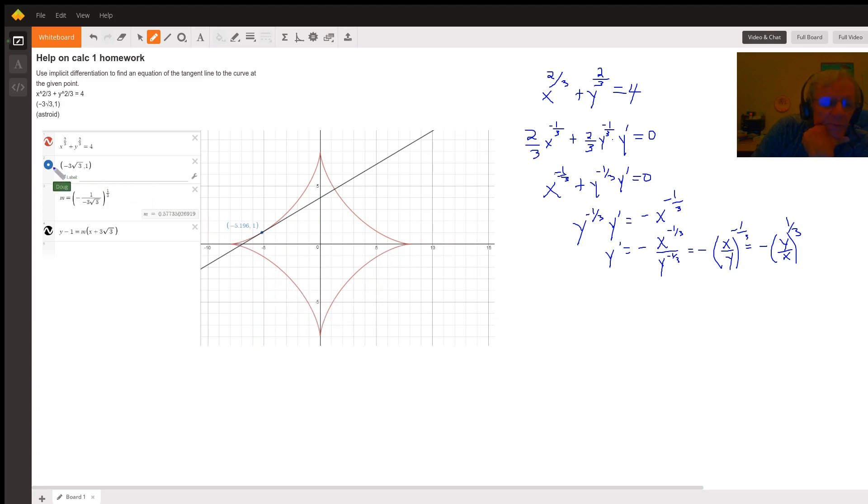I've plotted the point negative three radical three comma one, and if you substitute these values in for x and y, you'll see you do get a true statement, so indeed that point is on the graph of the relation between x and y.